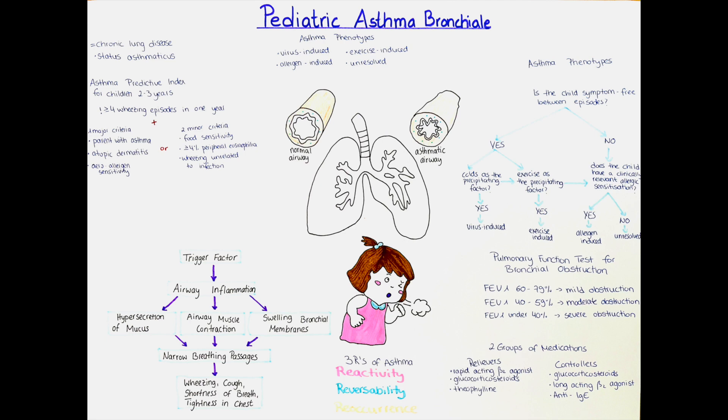Other possible differential diagnoses to bronchial asthma include a foreign body stuck in the airways causing a wheezing sound, allergic rhinitis which also leads to airway obstruction, aspergillosis which is a fungal infection of the airways, aspiration syndromes, bronchiectasis, bronchiolitis, cystic fibrosis, gastroesophageal reflux disease, and many more. The differential diagnoses are quite broad, which makes it even more important to assess the patient carefully and thoroughly.